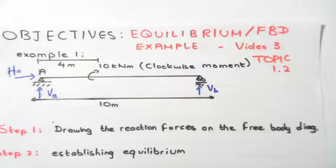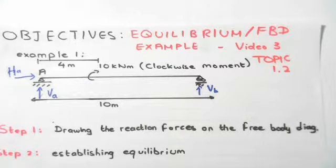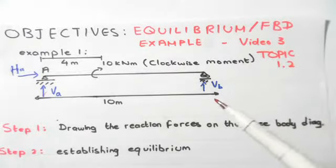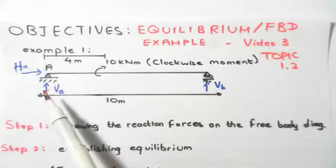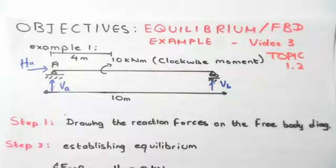Step one is to draw in the reaction forces on the free body diagram. The roller has a vertical restraint only, so it has one vertical reaction force — it can't move up and down but can move left and right. A pin is restrained both vertically and horizontally, so we draw both a vertical and horizontal reaction force. This establishes our free body diagram.